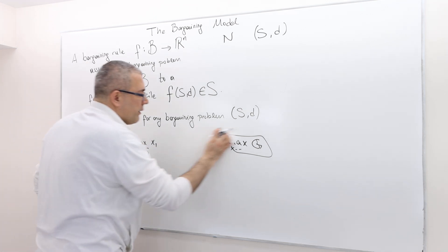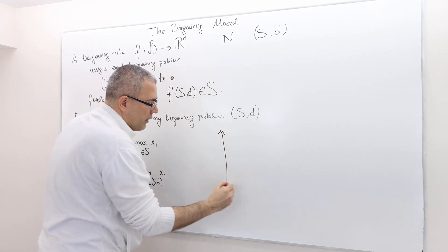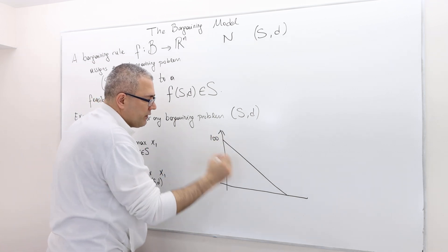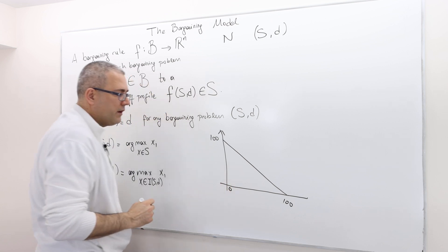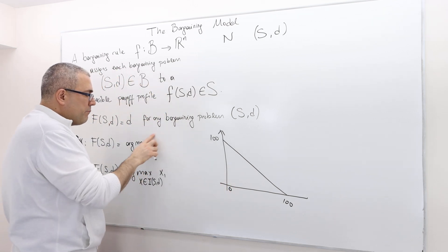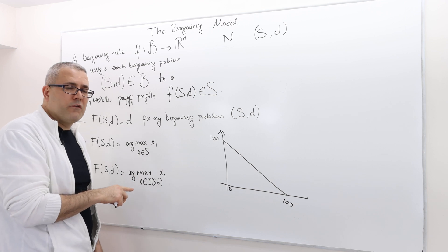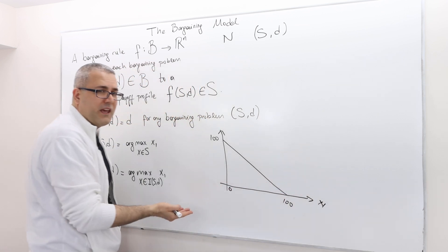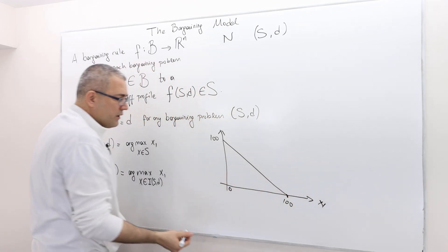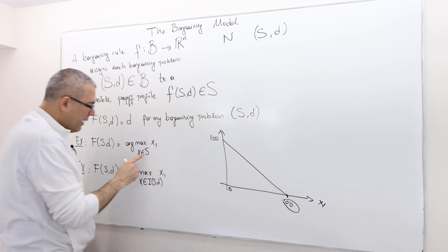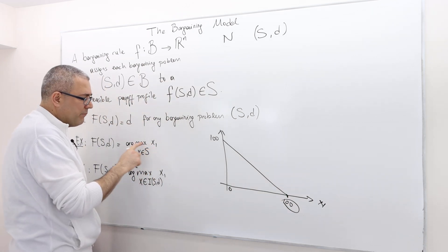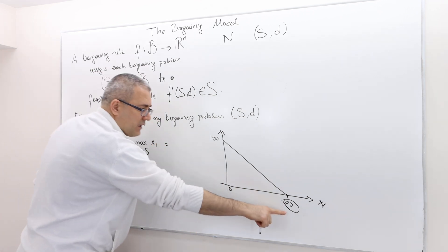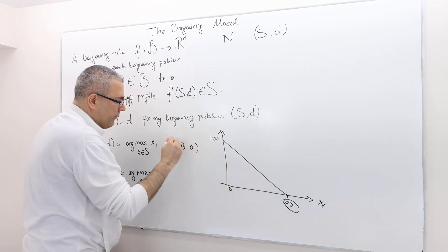So what we have is argmax x1, by choosing x in S. It basically says the following. Look at your bargaining problem. So I'm going to go back to my original buyer seller example, 100, 100. Remember, d was the zero point. So it says, I'm going to maximize the surplus of player one only. And as you know, this is basically what player one's payoff can take at most 100. So therefore, the x in S which gives me the maximum x1 is this point, which is x1 is 100, and x2 is zero.